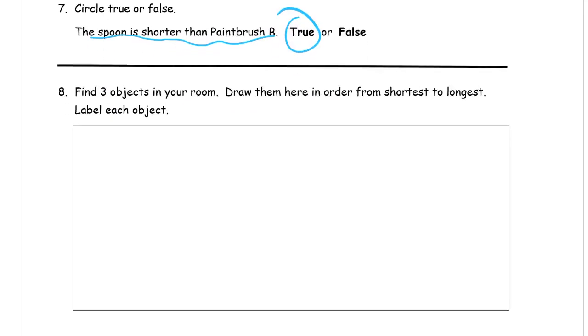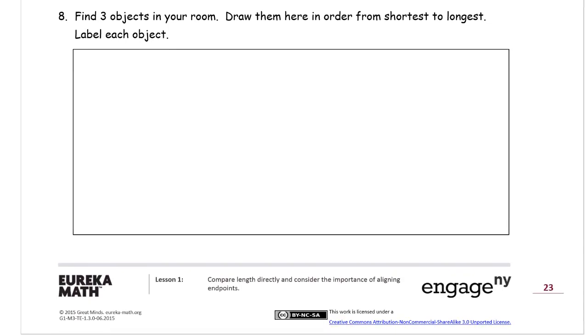Find three objects in your room. Draw them here in order from shortest to longest and label each object. Just to make something up here, you're going to look at other things that are in your room. Here a pencil would be the shortest.